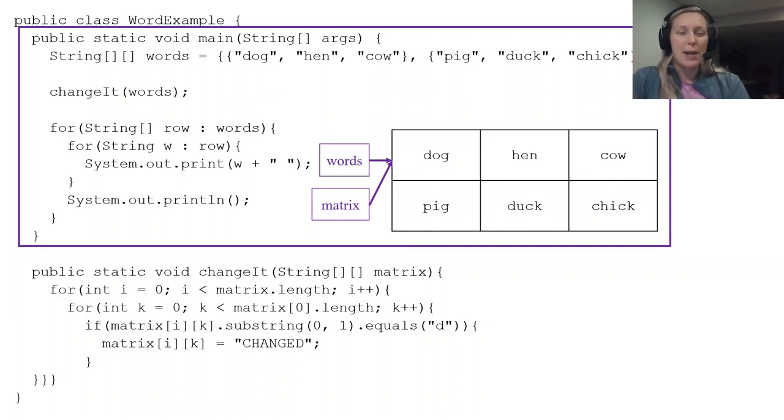Because we're the same anyway, right? That's not why Java does it, but that's just kind of how I like to think of it when we're talking about passing by reference. They're just going to reference the same thing. So now when I come down here and the changeIt method runs and makes changes to matrix, we're going to see that it actually also changes words.